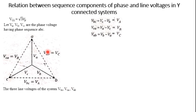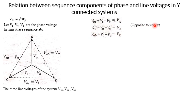From this we can write VBC as VC minus VB, VCA as VA minus VC, and VAB as VB minus VA. We now understand the relation between phase and line voltages. We need to calculate the positive sequence component of the line voltage, and similarly for the negative sequence and zero sequence.